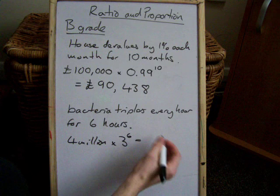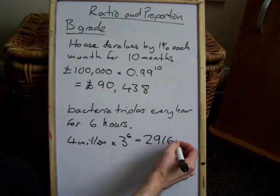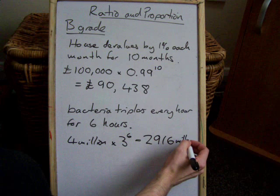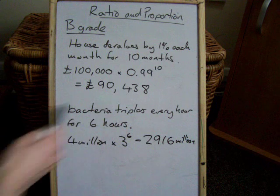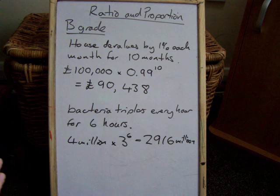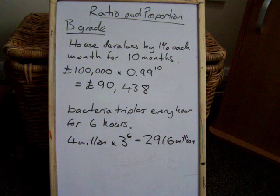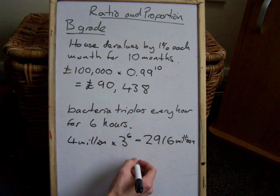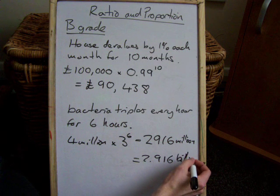4 times 3 to the power of 6 equals 2,916 million bacteria. Using that power of 6 is the B grade — that's the B level material. If you're doing the foundation exam, it's not on your exam; this is specifically for the higher exam. So 4 million times 3 to the power of 6 equals 2,916 million, which is 2.916 billion bacteria.